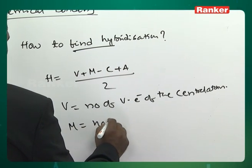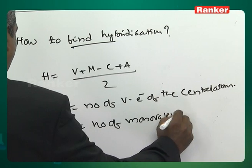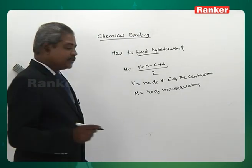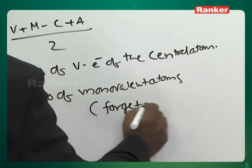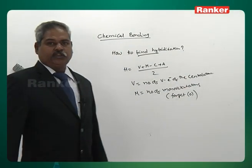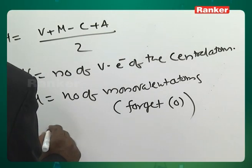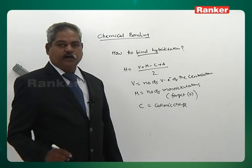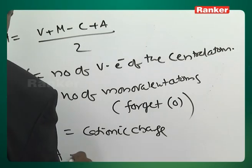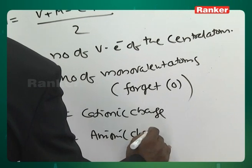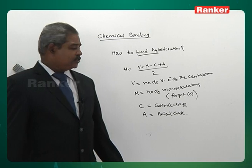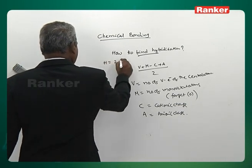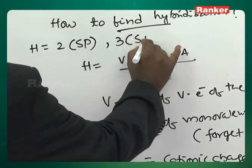M is the number of monovalent atoms — you should not count oxygen; just ignore oxygens. For SO3, the three oxygens are not counted at all. C is the cationic charge (subtract if there is a positive charge). A is the anionic charge (add if there is a negative charge). After calculation, H = 2 gives sp, 3 gives sp2, 4 gives sp3, 5 gives sp3d, 6 gives sp3d2, and so on.